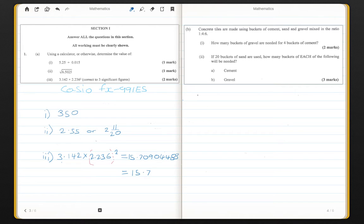We move on now to question 1B. So we say now that concrete tiles are made using buckets of cement, sand and gravel, mixed in a ratio of 1 to 4 to 6. The first question, part 1, says, How many buckets of gravel are needed for 4 buckets of cement? Before we start, let me just write down the information.